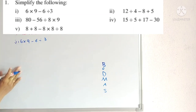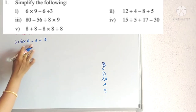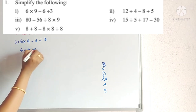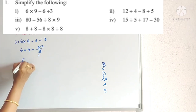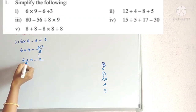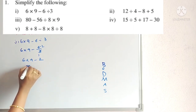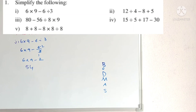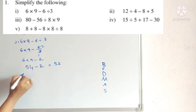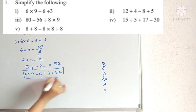Operations present: multiplication, subtraction, division. We must perform division first. So 6 × 9 − 6 ÷ 3: divide 6 by 3 = 2. We get 6 × 9 − 2. Next, multiplication: 6 × 9 = 54. Then 54 − 2 = 52. So 6 × 9 − 6 ÷ 3 = 52.